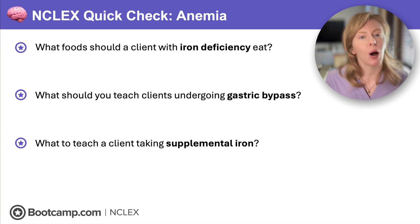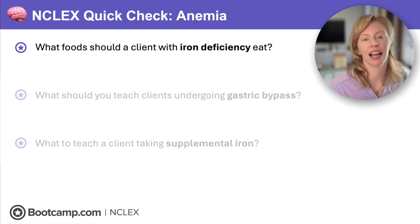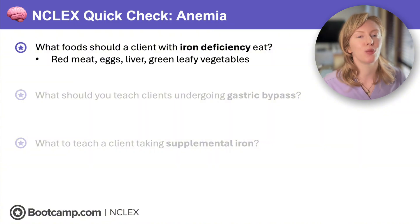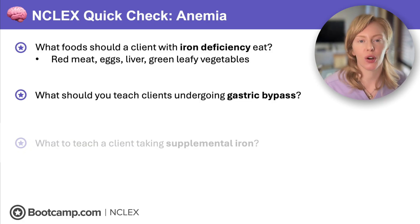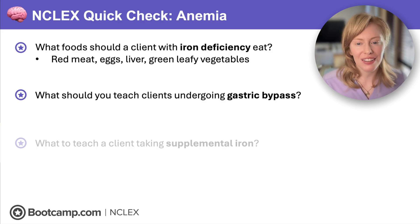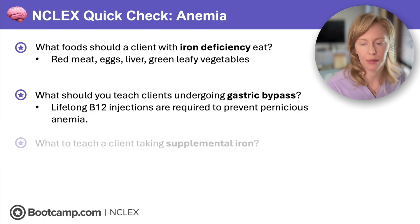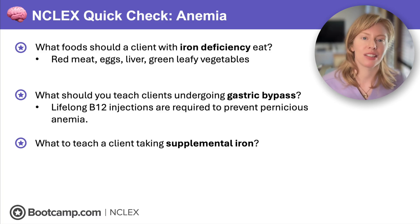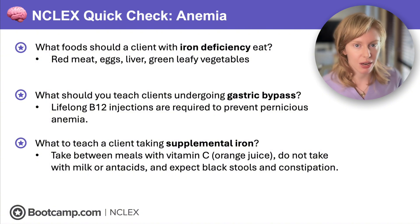NCLEX quick check on anemia: What foods should a client with iron deficiency eat? That's the blood and the baby — red meat and eggs — as well as liver and green leafy vegetables. What should you teach clients undergoing gastric bypass? They don't have parietal cells and can't absorb oral B12, so they need lifelong B12 injections to prevent pernicious anemia. What should you teach a client taking supplemental iron? Take it between meals with orange juice, not with milk or antacids, and warn them about black stools and constipation.